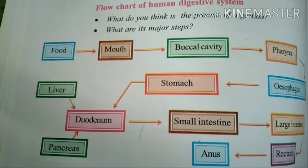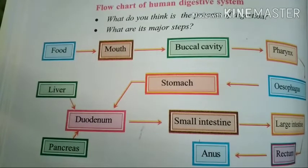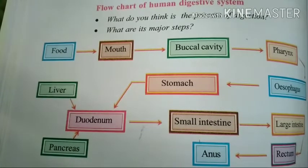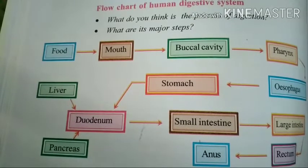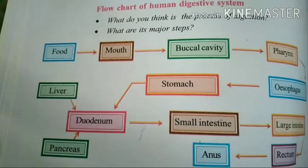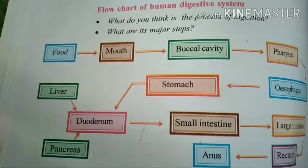From the pharynx, food goes to the esophagus — the other name for the food pipe. The food particles pass from the buccal cavity to the esophagus through the pharynx. Then the food comes to the stomach, where it waits two to three hours. The food is retained at the stomach portion.